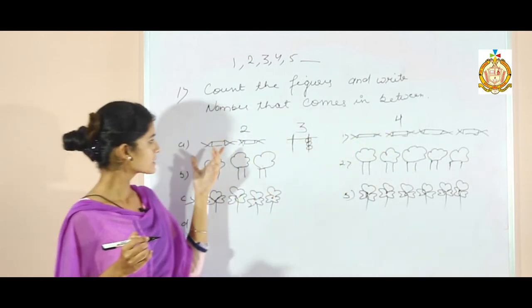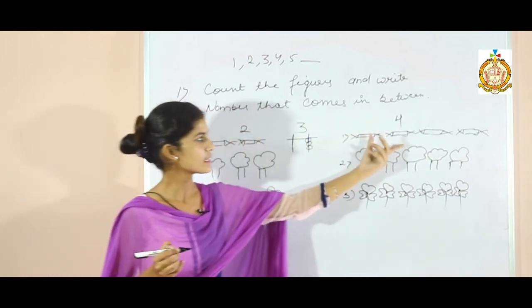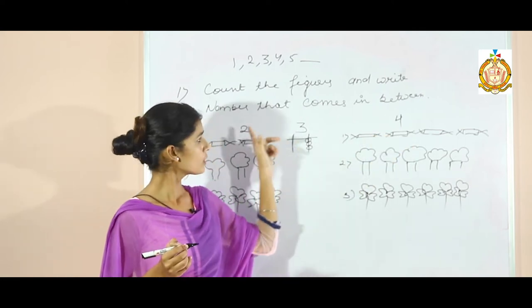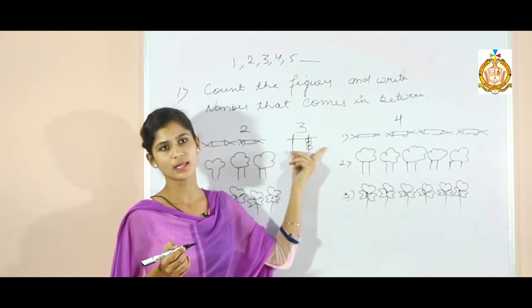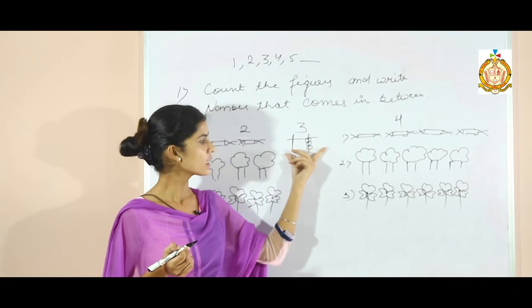Right hand side or left side 2. And right hand side 4. So, which number comes between 2 and 4? 3. So, you have to draw 3 beads.